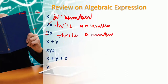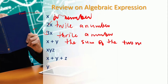Then we have x plus y. If we have x as a number, y is another number. So we can say the sum of the two numbers — x plus y. Then if we have x, y, z as consecutive variables.